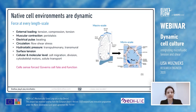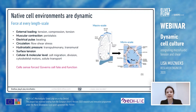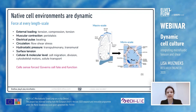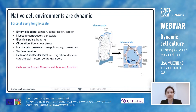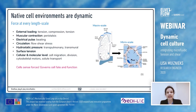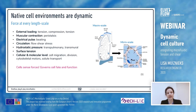Forces are also abundant at the cellular and molecular level and they can come from a variety of sources, including migration of cells, cell division, and transport of solutes. The early take-home message here is that forces are abundant in the body and cells sense these forces, and this can trigger signaling cascades that can result in differences in gene expression that govern cell fate and function.